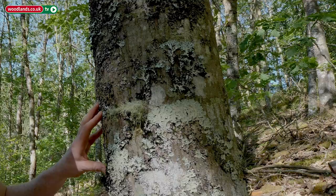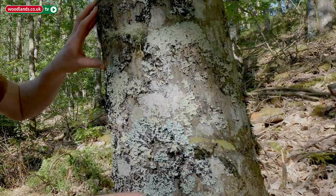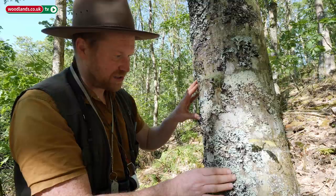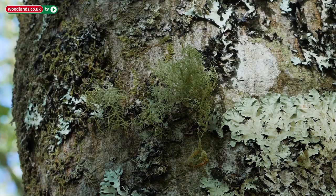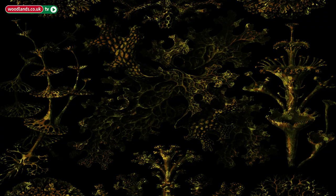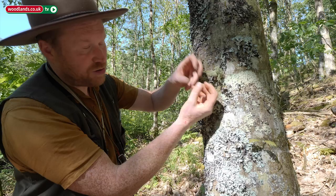Here we have a red oak tree, Quercus rubra. This tree, as you can see, is supporting a wide variety of different lichens, lots of different colours and textures. There are lots of lichens here, but we often categorize them broadly into three types — three growth forms. The first growth form is what we call technically the fruticose growth form, which is sometimes called a shrubby growth form.